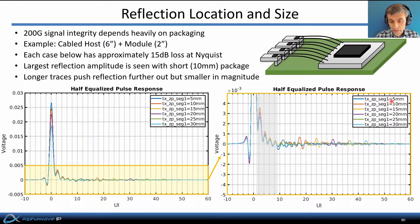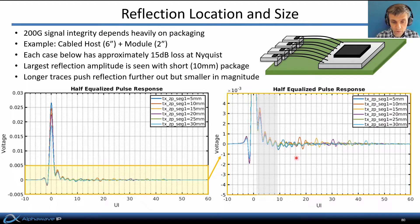With varying package sizes, we get varying lengths of package trace, which causes reflections due to package discontinuities to move around. In fact, the largest reflection amplitude is seen with a relatively short 10-millimeter package trace, shown here in orange. That's because the longer traces push reflections farther out, but make them smaller in magnitude due to attenuation of the package trace.